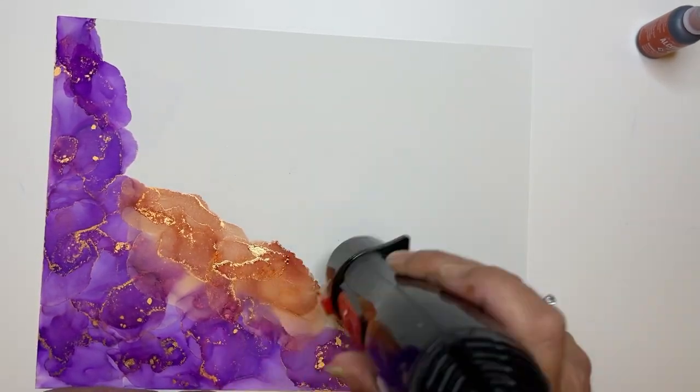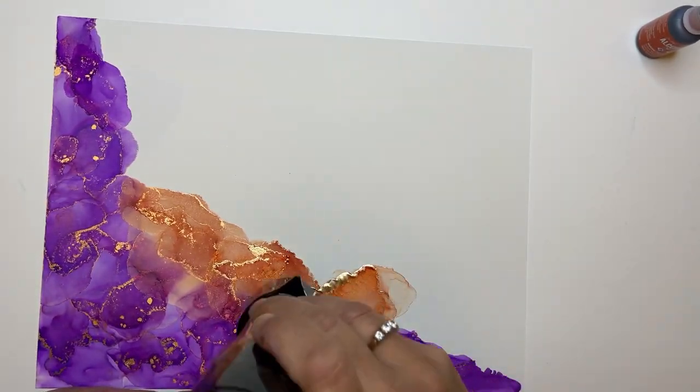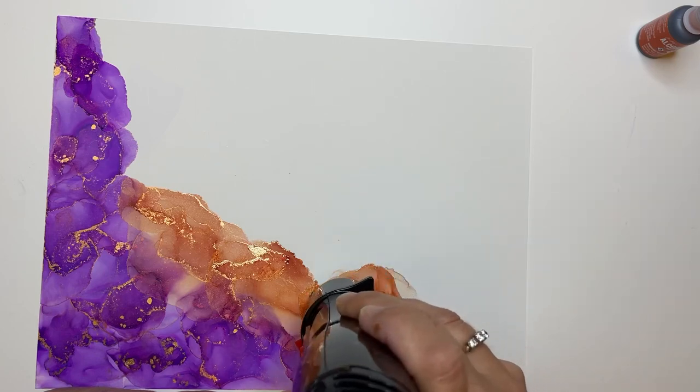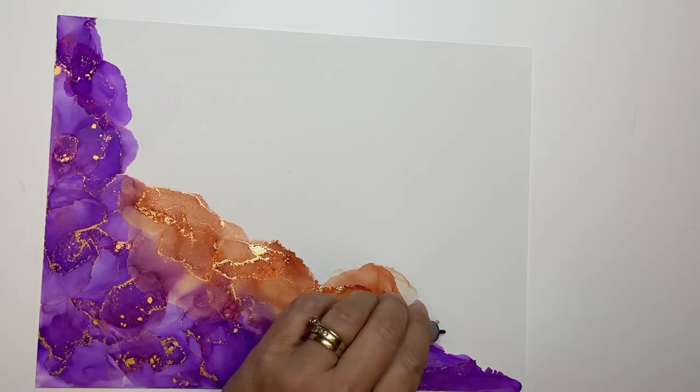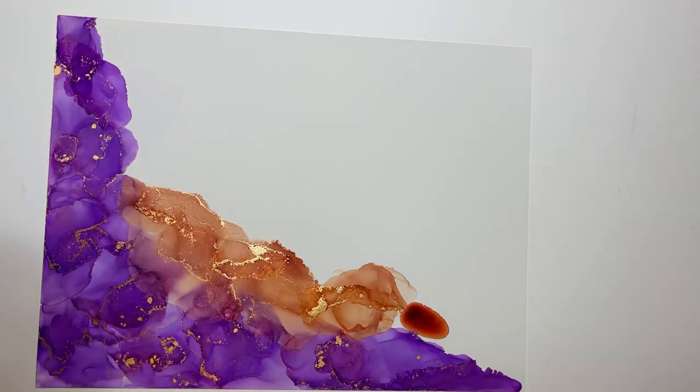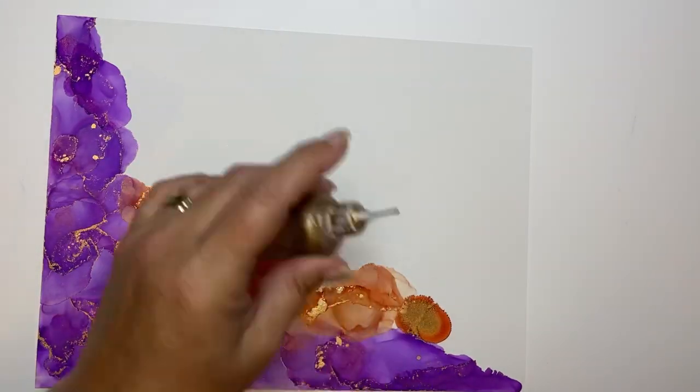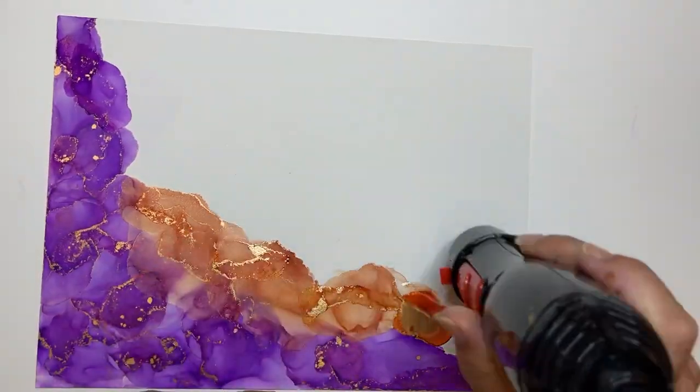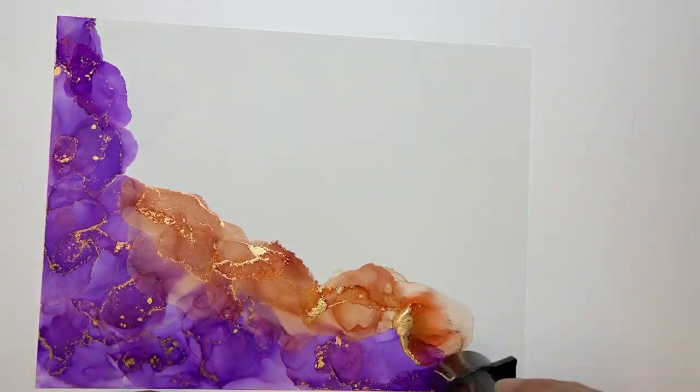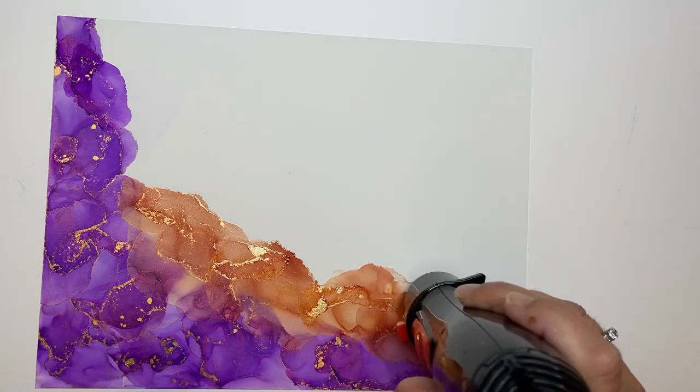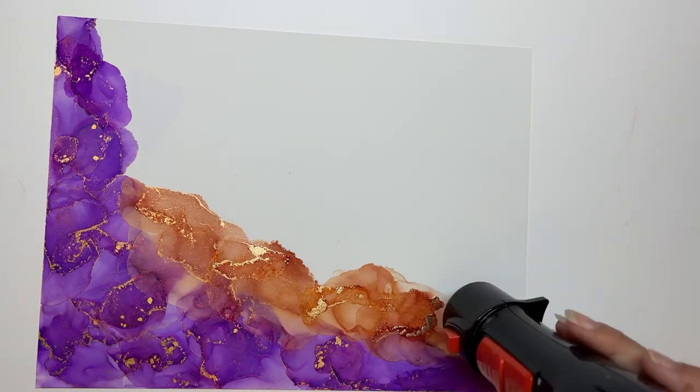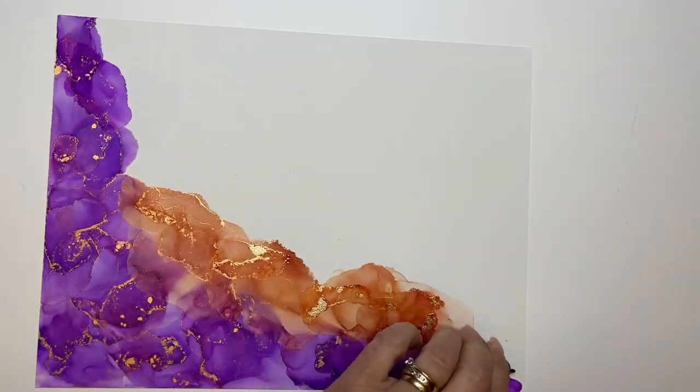You can see that terracotta when I put it down next to that purple twilight, I was cringing. I was like oh my goodness that looks so bad, there is no way I'm going to be able to make this look good. But I was very pleasantly surprised with how it turned out.